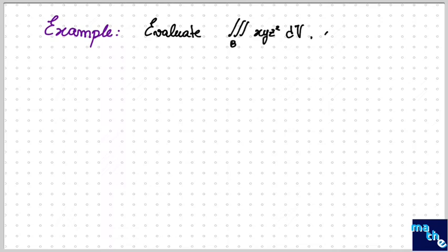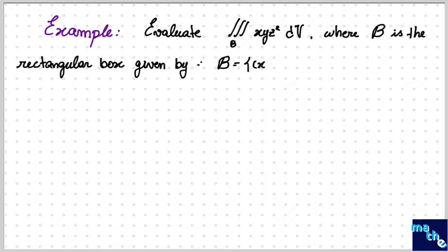Okay, so let's check out an example so that we can better understand this concept. Here we are asked to evaluate the triple integral over the region B of XYZ² dV, where B is the rectangular box which is defined in X, Y and Z, where X is bounded between 3 and 5, Y is bounded between -3 and 6, and Z is bounded between 0 and 2.